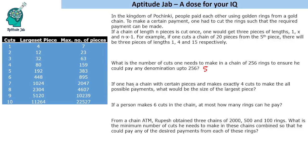Question 2: If a person makes exactly 4 cuts to enable all possible payments, what is the size of the largest piece? With 4 cuts, the largest piece should be 80.